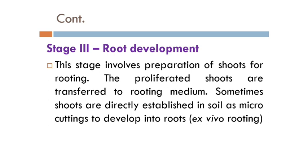Stage 3 is root development. This stage involves preparation of shoots for rooting. The proliferated shoots are transferred to the rooting medium, which consists of a high level of auxin. Growth regulators play a very important role in shoot and root formation in tissue culture. Sometimes shoots are directly established in soil as micro-cuttings to develop roots — this process is called ex vivo rooting. In vitro rooting is also done for some crops.